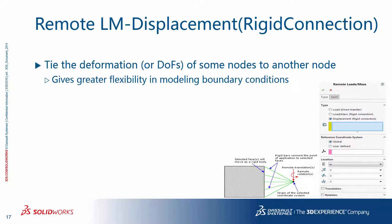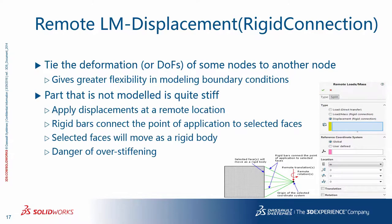The third option for remote load or mass is a displacement in the form of a rigid connection. What you are really doing is tying the deformation or degrees of freedom of some nodes to another node because of a rigid component connecting them — so this is like a remote restraint. You can use this option when the replaced components are rigid enough with respect to the modeled components and you know the remote translations and/or rotations that can replace their effect on the rest of the model. The point of application of the constraint is effectively connected to the selected faces by rigid bars. Keep in mind the potential of over-stiffening, as the selected faces being rigidly connected to a common point can only deform as a rigid body. High stresses can develop near faces with rigid connections.